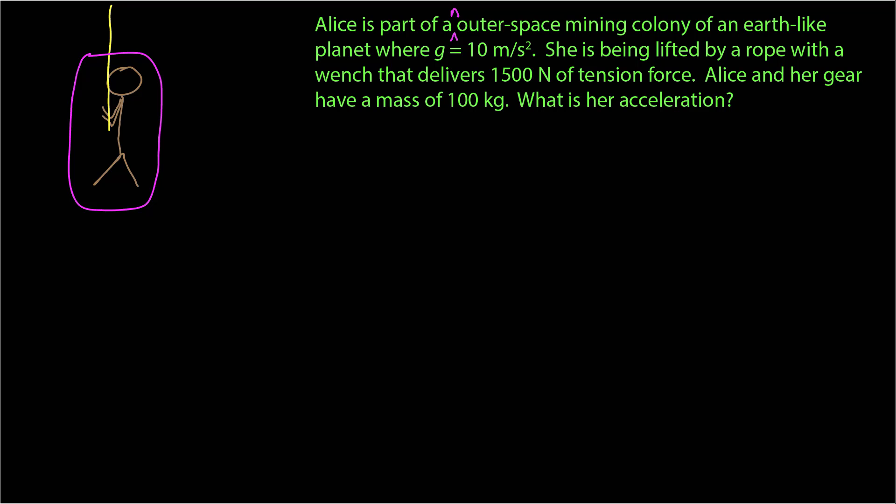Now, I want to find all the forces on that object. Forces have to come from an agent in physical contact with the object or gravity. So we only have two in this case: force due to the rope, which is a tension, and the force due to gravity. I've called them T and F sub G, and I've given them the vector signs.